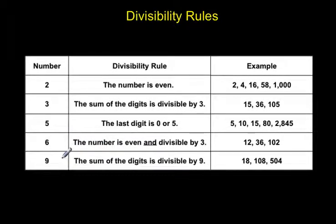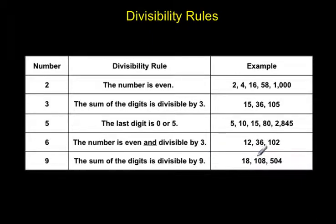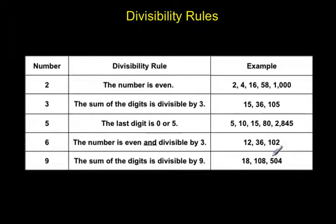For 9s, the divisibility rule is very similar to the 3 rule — exactly the same, just change the number. A number is divisible by 9 if the sum of the digits is divisible by 9. Take 18: 1 plus 8 is 9, and 9 is divisible by 9. Take 108: 1 plus 0 plus 8 is 9, so it's divisible by 9. And 504: 5 plus 0 plus 4 is 9, divisible by 9. You can also use larger numbers whose digits add up to other multiples of 9 — as long as the sum is divisible by 9, it works.